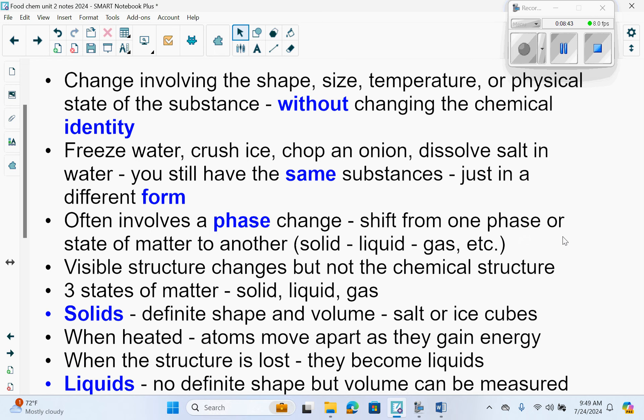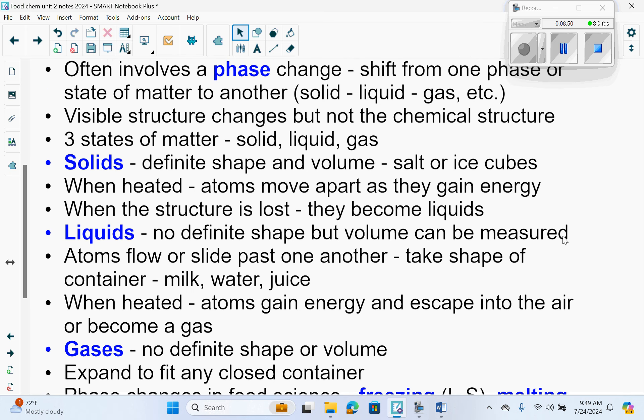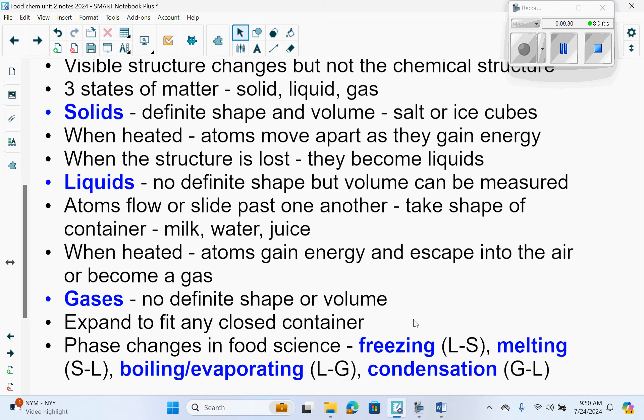Physical changes often involve a phase change, which is a shift from one phase or state of matter to another. Your states of matter are solid, liquid, and gas. The visible structure changes but not the chemical structure. Solids have a definite shape and volume, like salt or ice cubes. When heated, atoms move apart as they gain energy, and when that structure is lost, they become liquids. Liquids have no definite shape but the volume can be measured. Atoms flow or slide past one another and take the shape of the container, such as milk, water, or juice. When heated, atoms gain energy and escape into the air and become a gas. Gases have no definite shape or volume. They expand to fit any closed container.